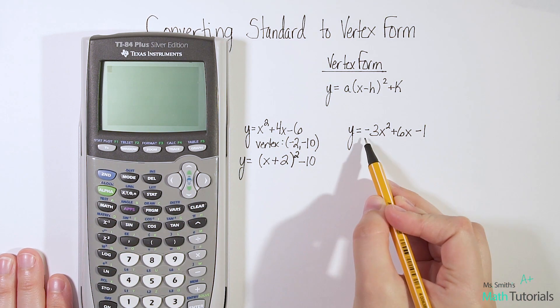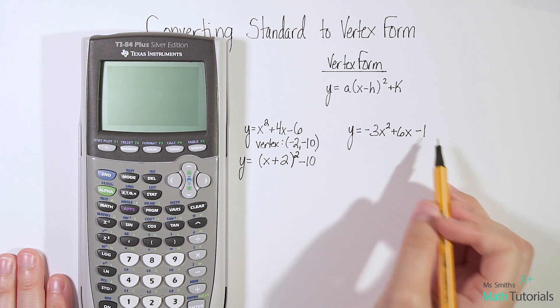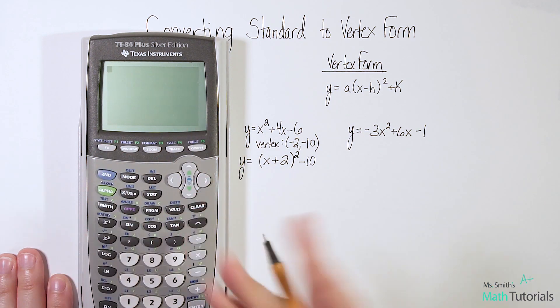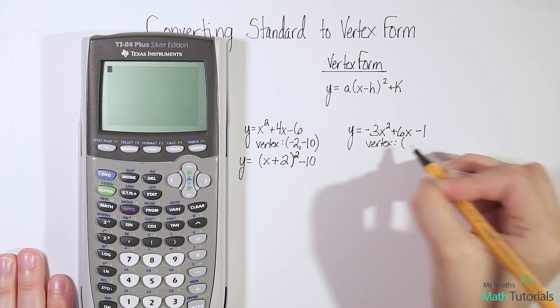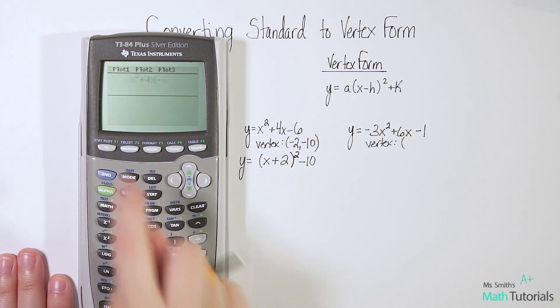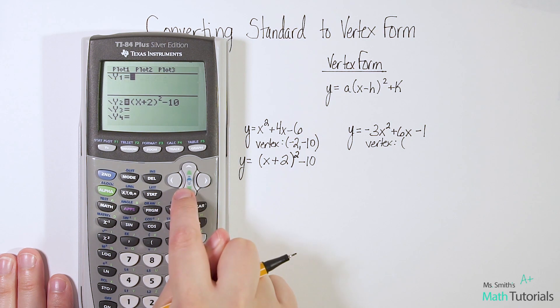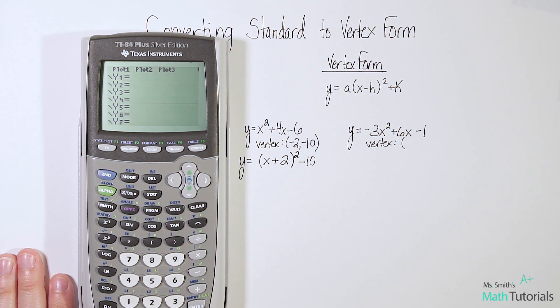Let's look at this third example. So negative 3x squared plus 6x minus 1. First thing we need to know is the vertex. Really, the only thing we need to know is the vertex. So let's go to our y equals. Clear out what you had in there. Negative 3x squared plus 6x minus 1. Let's figure out what is our vertex here.